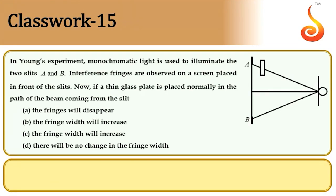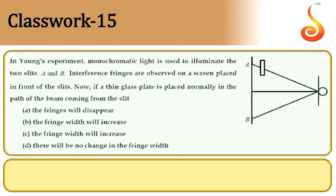Example 15: In Young's experiment with monochromatic light illuminating slits A and B, if a thin glass plate is placed normally in the path of one beam, the fringe pattern shifts but there is no change in the fringe width. The fringe width remains the same but there will be a shift in position.